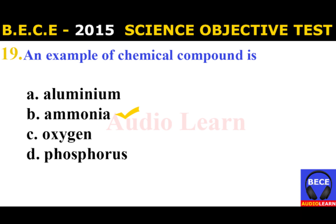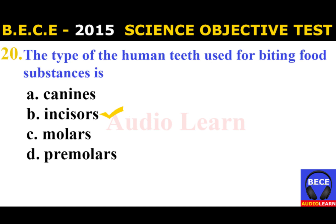Number 19: An example of a chemical compound is A. Aluminium, B. Ammonia, C. Oxygen, D. Phosphorus. The answer is B. Ammonia. An example of a chemical compound is ammonia.